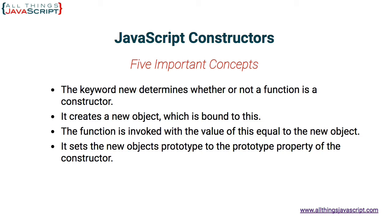Finally, the fifth important concept is that it returns the new object. The end result of a constructor is that an object is returned — you receive an object back. If you choose to return a non-primitive value using the return keyword inside of the function, that will take the place of the new object that would normally be returned. But it will automatically return the new object without you putting in a return keyword.